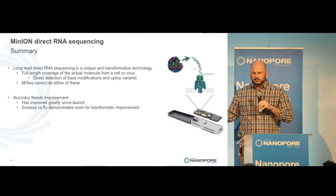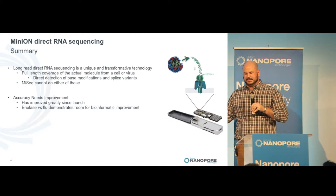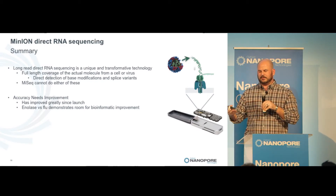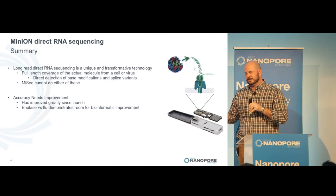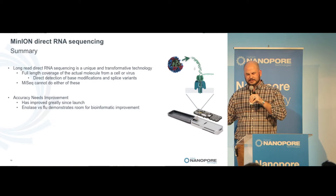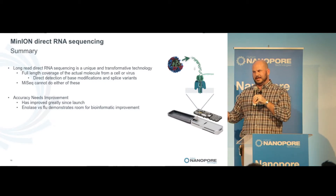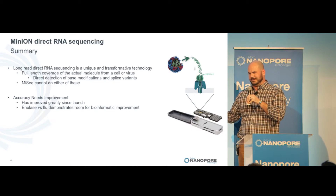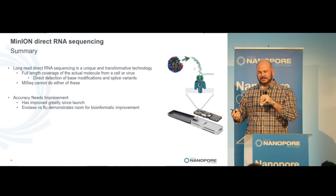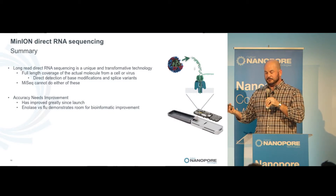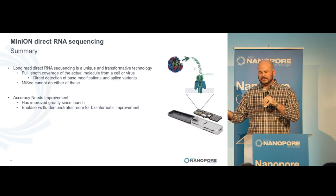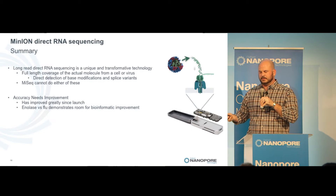In summary, long-read direct RNA sequencing is a unique and transformative technology. It allows full-length coverage of the actual molecule from a cellular virus, providing opportunity for direct detection of base modifications and splice variants — things MiSeq simply cannot do, making the accuracy comparison somewhat unfair. Accuracy still needs improvement, but it has improved greatly since launch and continues to improve. The enolase versus flu comparison demonstrates room for bioinformatic improvement.